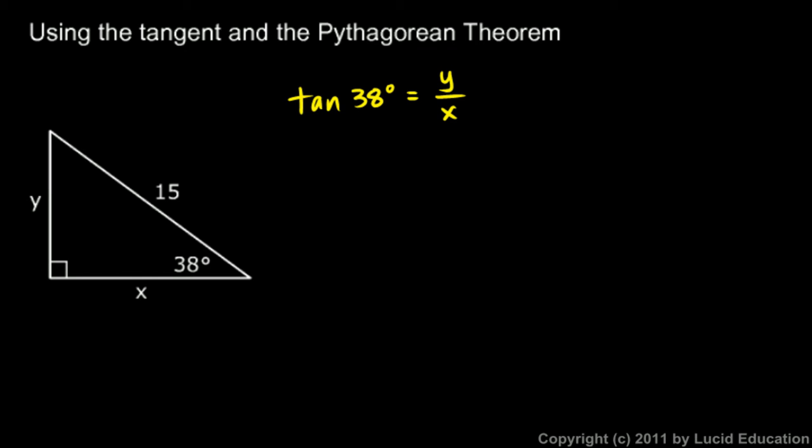Fortunately, I can look at this diagram and produce another equation. This is a right triangle, so I know that this squared plus that squared must be the hypotenuse squared. So I'll write in this case x squared plus y squared is 15 squared.